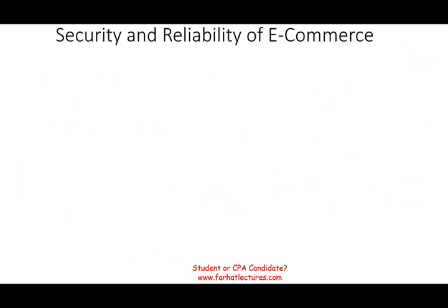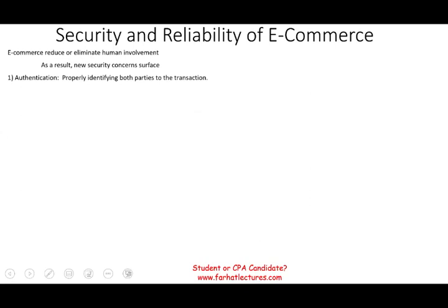E-commerce has its own vulnerabilities, so we need to discuss security and reliability. E-commerce reduces or eliminates human involvement, so security concerns surface. The first is authentication — properly identifying both parties to the transaction. If you're buying something from me, I need to know exactly who you are and you need to know exactly who I am. A common method of authentication is login and password — the buyer must create an account and identify themselves.